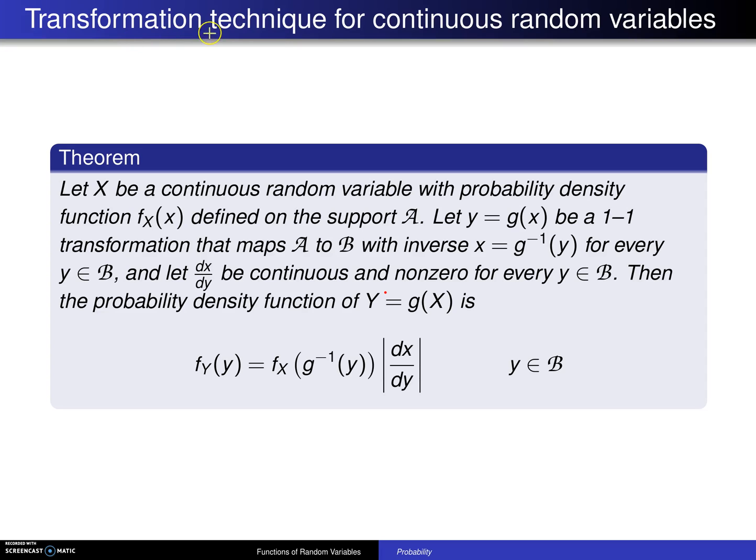Here is the transformation technique for continuous random variables. In this particular case there will be a single random variable X, and we are trying to figure out the distribution of the random variable Y equals g of X. So here is the theorem.